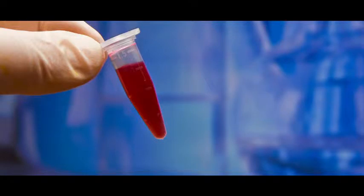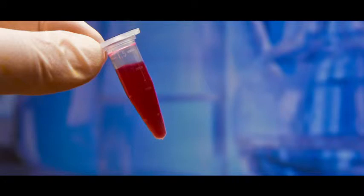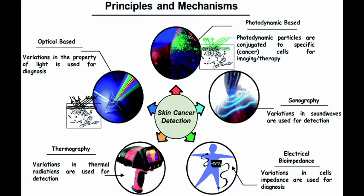Cancer detection methods include blood examination, biopsy, FNAC (fine needle aspiration cytology) for breast cysts or tumors, Pap smear for cervical carcinoma, and X-ray, CT, and MRI scans — the MRI scan being the safest. Modern techniques include using antibodies against cancer-specific antigens and molecular biology to detect genes causing hereditary cancers.